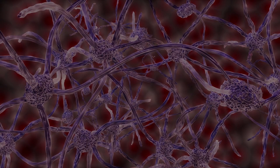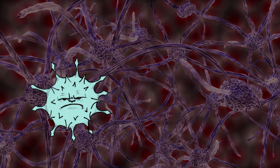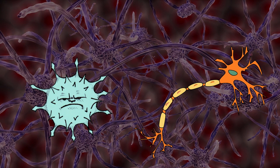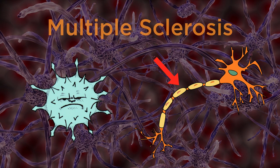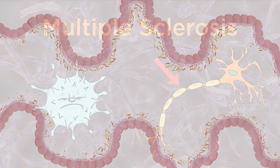Also, sequences on the Epstein-Barr virus share similarities with sequences on the myelin protein, which is like the insulation sheath that goes around the nerves. When the body confuses these two, it results in multiple sclerosis — the attacking of the myelin sheath around the nerves.